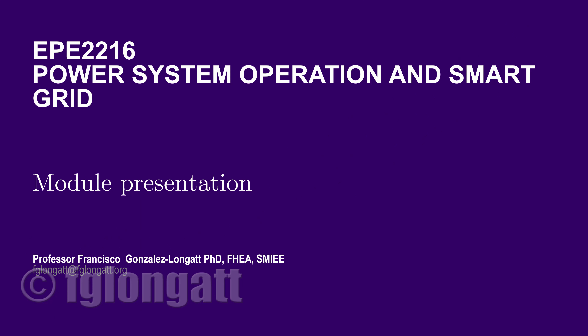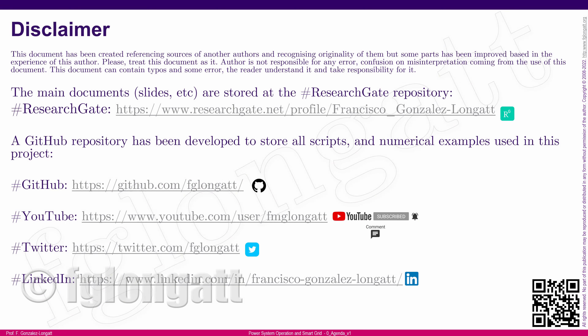Before we start, I would like to remind you that all the information slides are located in my ResearchGate repository. Also during this module, you will have some practical examples, and all those practical examples — MATLAB scripts, DIgSILENT Power Factory files and so on — all of them will be located in my GitHub repository.